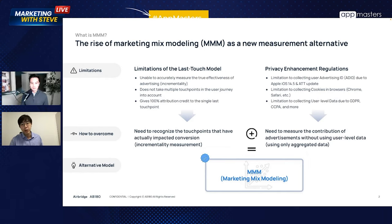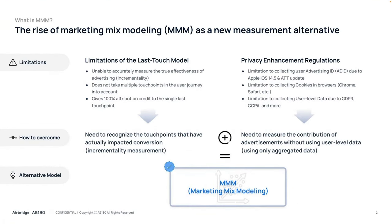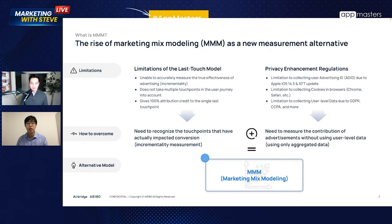The second reason we need MMM is because of privacy changes. iOS 14.5 and ATT had a huge impact across the industry — it distorted the numbers we're seeing on MMP dashboards and ad platforms. We also have browsers implementing new policies to decay third-party cookies, like Intelligent Tracking Prevention in Safari, and similar ones in Chrome and Firefox. And there are regulations like GDPR and CCPA, with more to come. We need to measure advertising contribution without using individual user-level granular data.